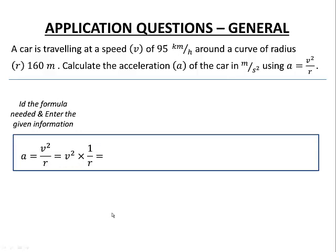Our velocity was 95 — remember we have to square it — with units of kilometers per hour, and those units must also be squared. Then one over radius: 1 over 160 meters. Our current units for acceleration are kilometers squared per hour squared per meter, but we want meters per second squared, so we need to perform unit conversions using the unit ratio technique.